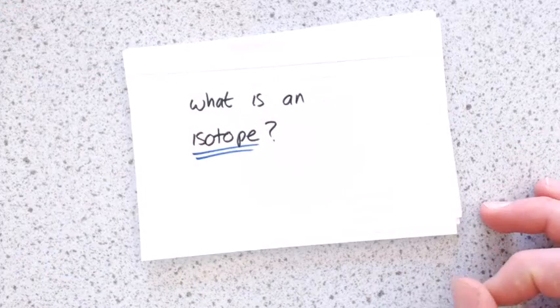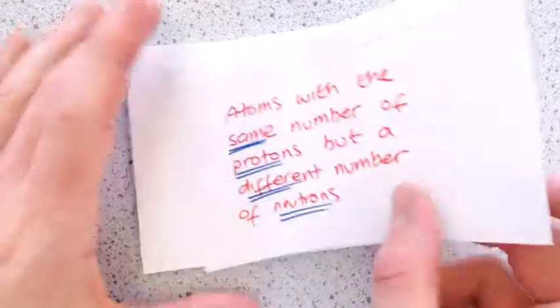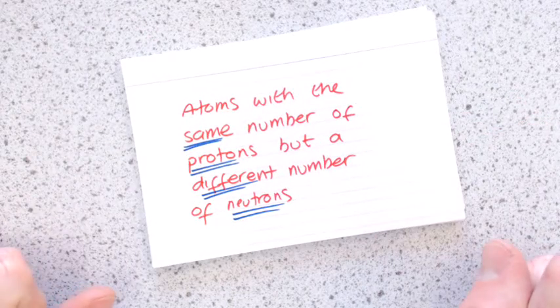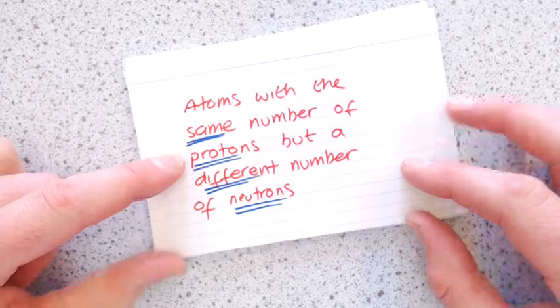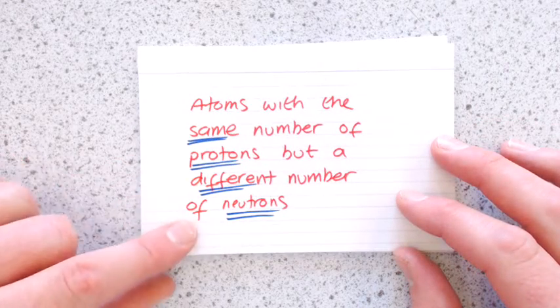Next one. What is an isotope? So an isotope are atoms with the same number of protons but a different number of neutrons.